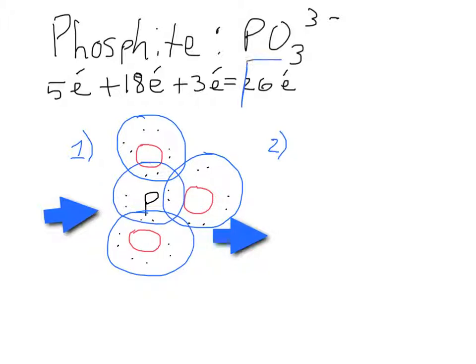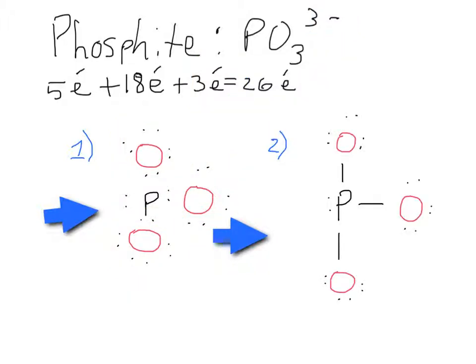Now we have a total of 26 electrons shown in this skeleton. With that 3 added, taking that into account for the 3- charge.